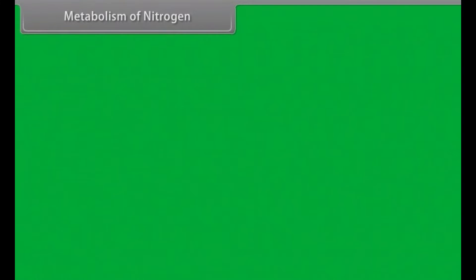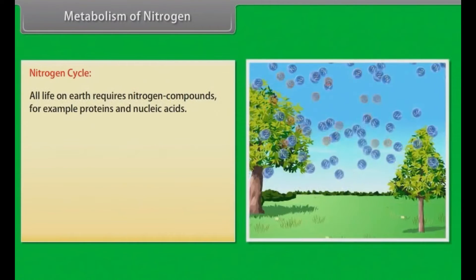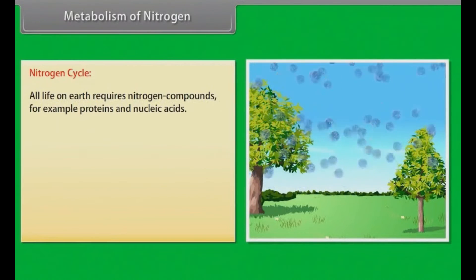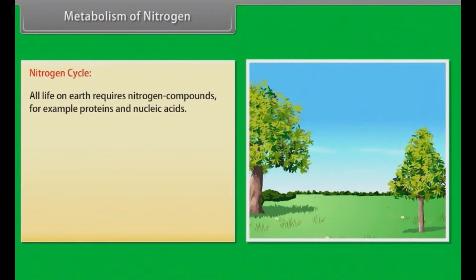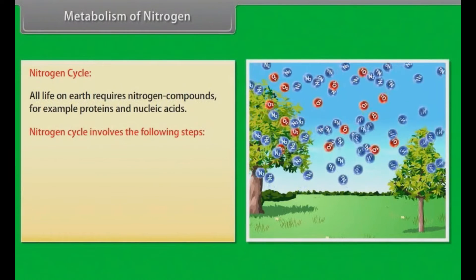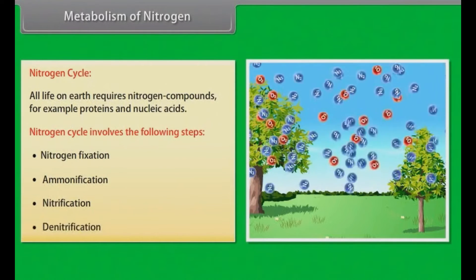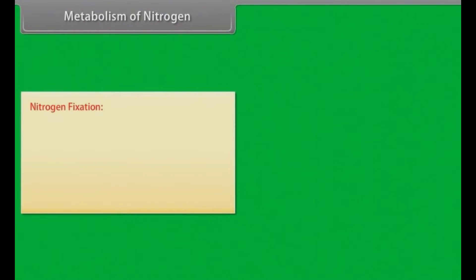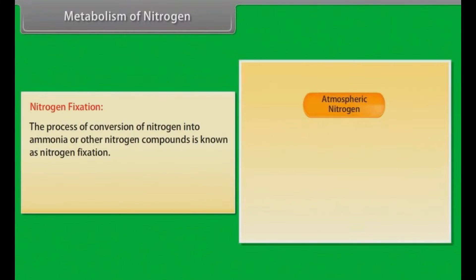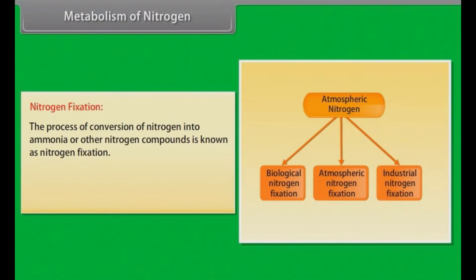Metabolism of nitrogen — the nitrogen cycle: all life on earth requires nitrogen compounds such as proteins and nucleic acids. The nitrogen cycle involves the following steps: nitrogen fixation, ammonification, nitrification, and denitrification. Nitrogen fixation is the process of conversion of nitrogen into ammonia or other nitrogen compounds.